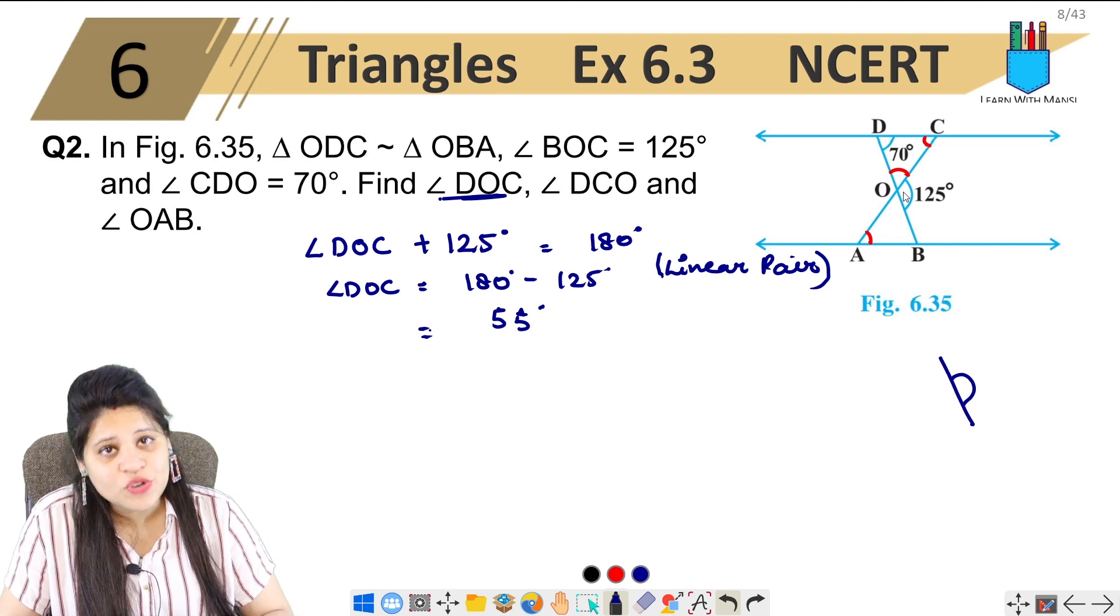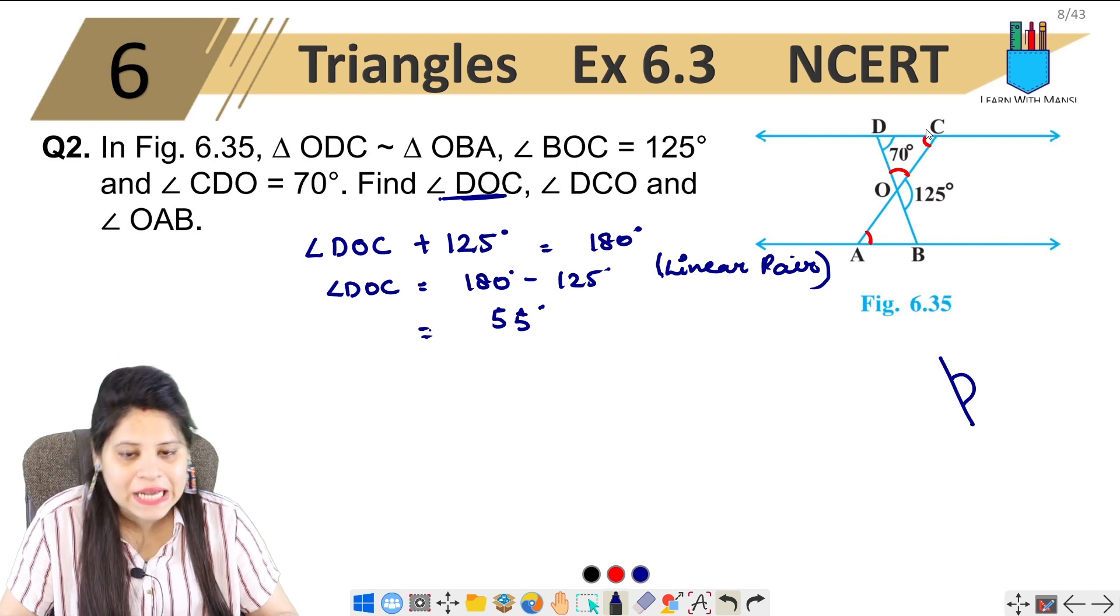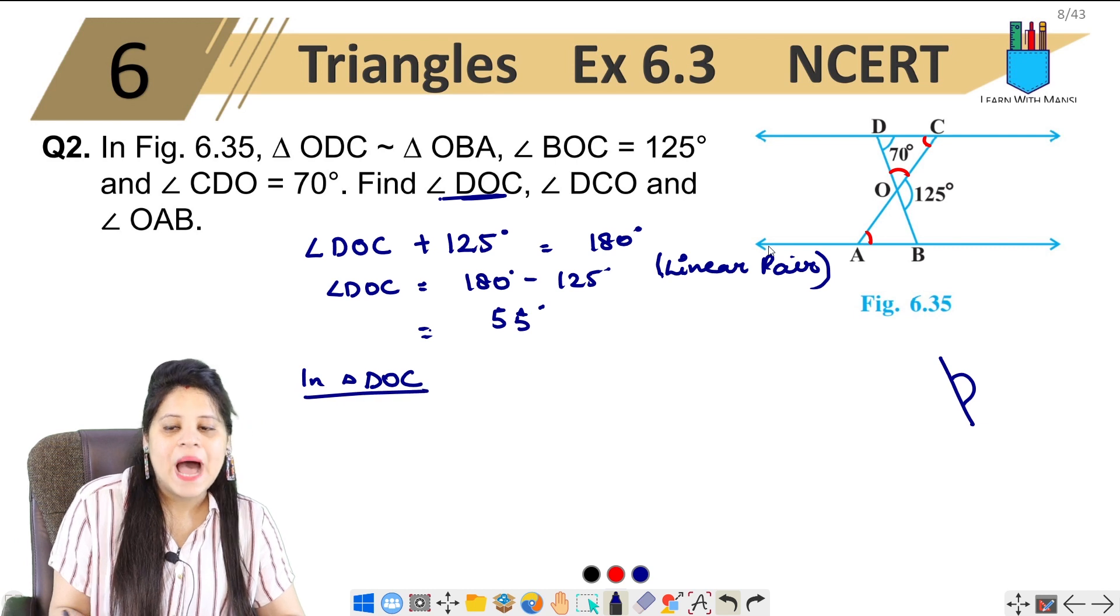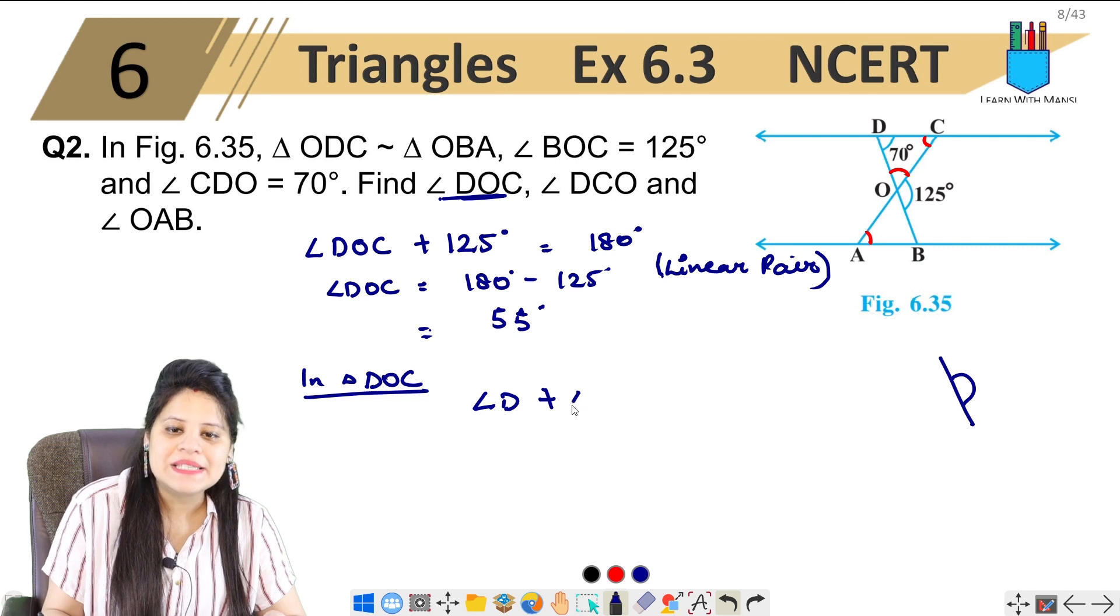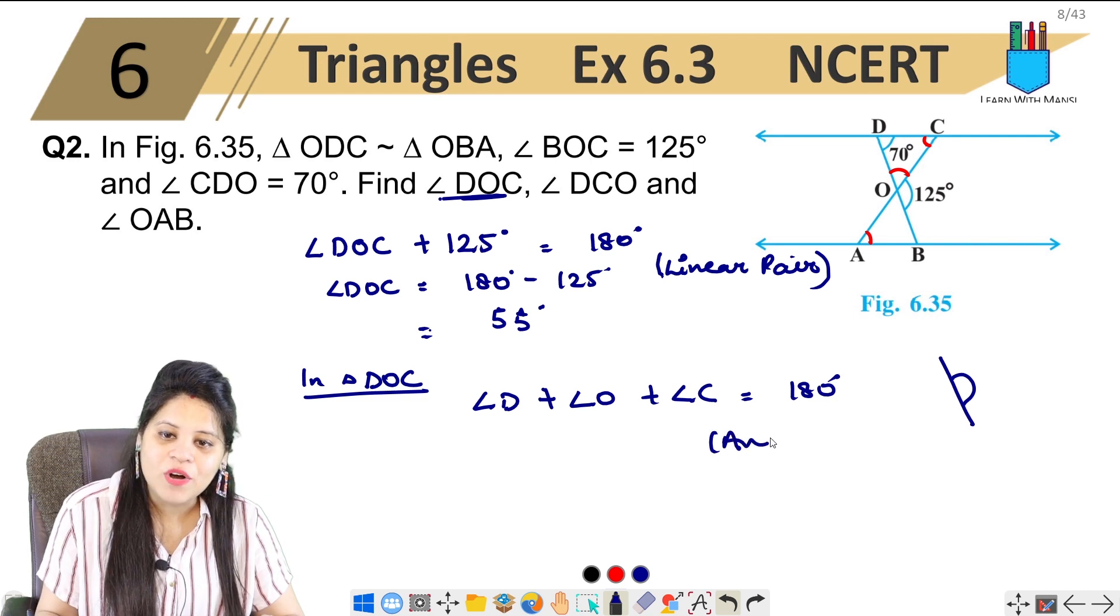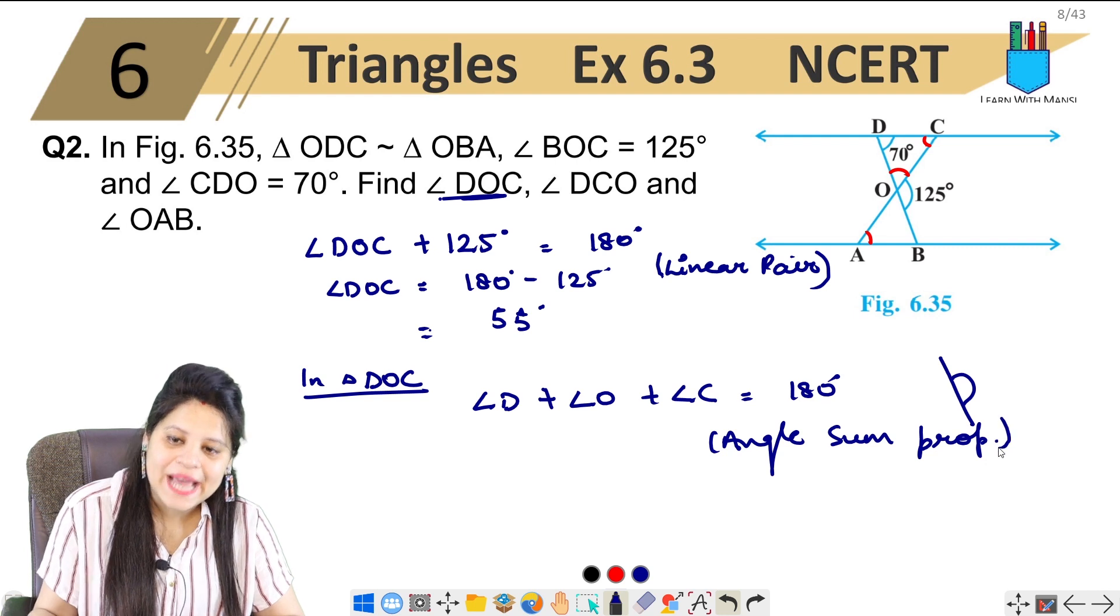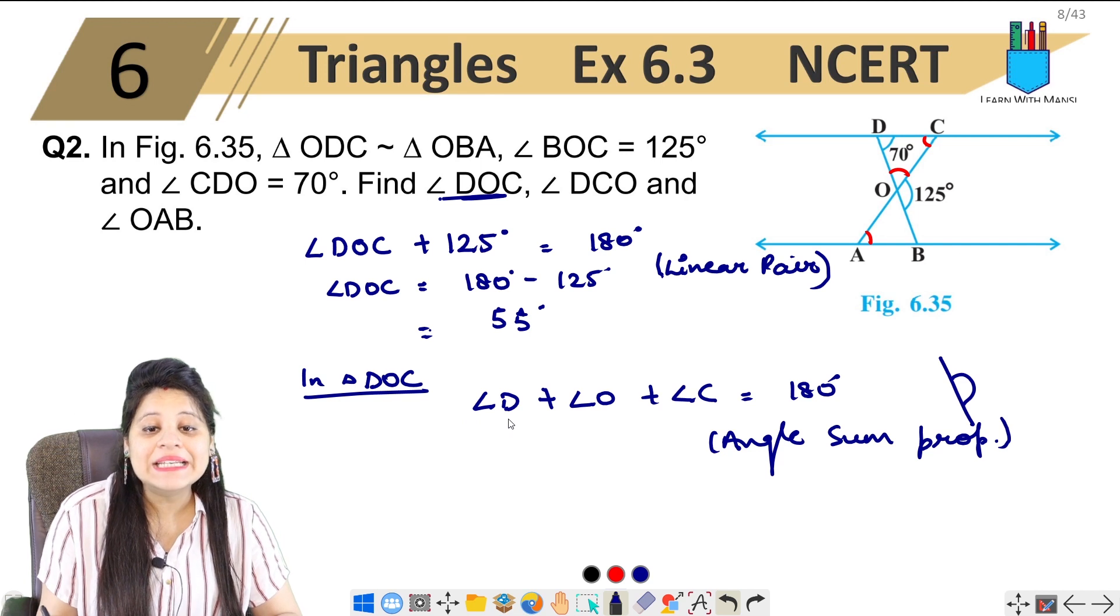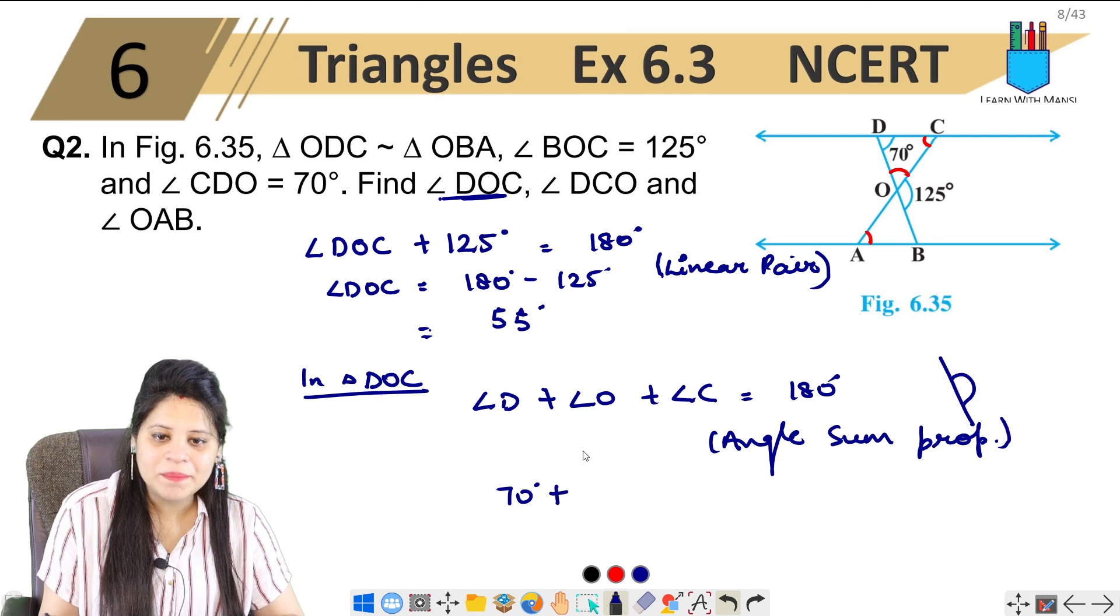Now, if I talk about triangle DOC, angle D plus angle O plus angle C equals 180 degrees because of angle sum property. We know that all angles sum to 180 degrees. Angle D is already given as 70 degrees, plus angle O.